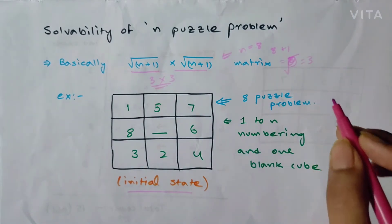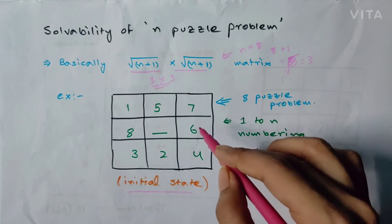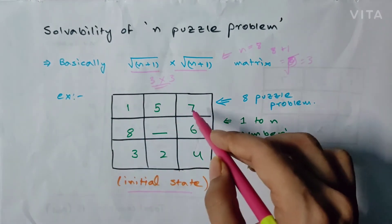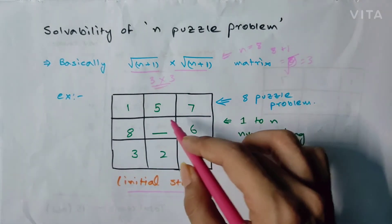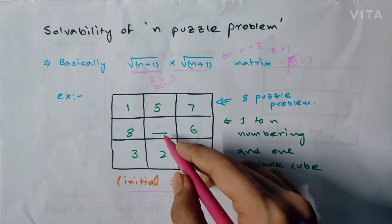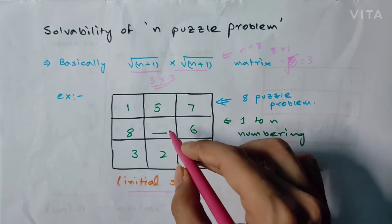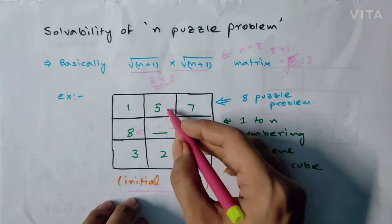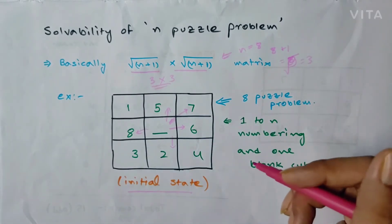In an N-puzzle problem, the numbering in these cubes will be from 1 to N. Here it is an 8-puzzle problem, so the numbering will be from 1 to 8 — 1, 2, 3, 4, 5, 6, 7, 8 — and the ninth one will be a blank box with no value. We proceed by shifting this blank box step by step, but we can only move it right, left, up, or down. Diagonal moves are not allowed — that is our constraint.